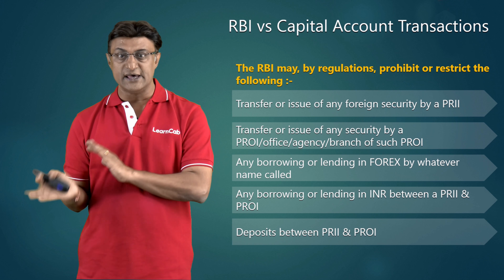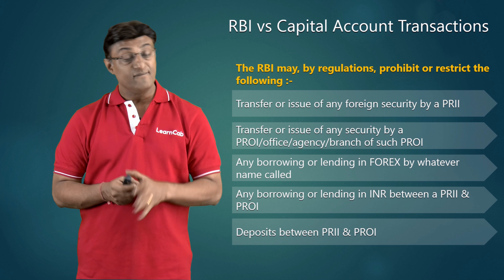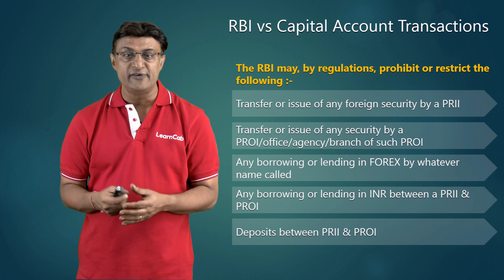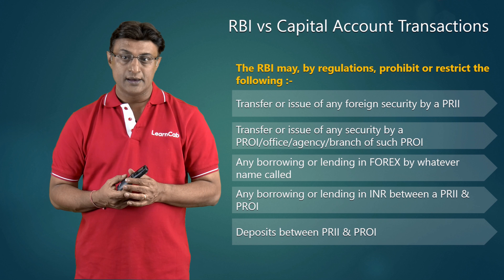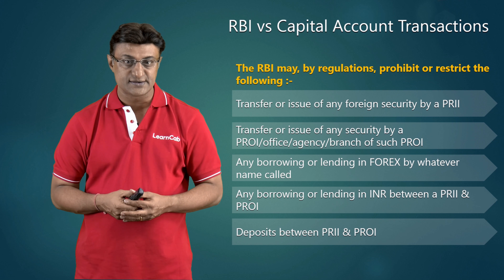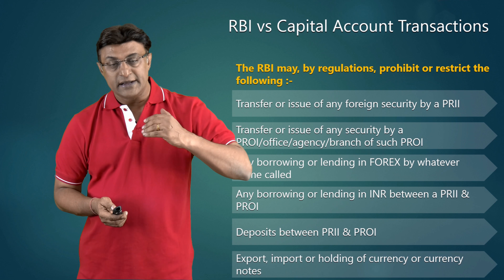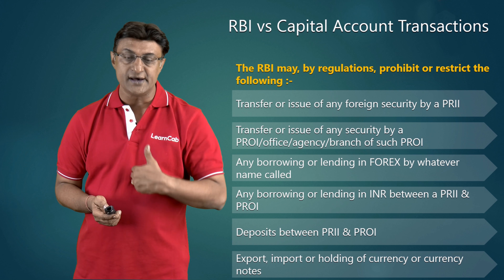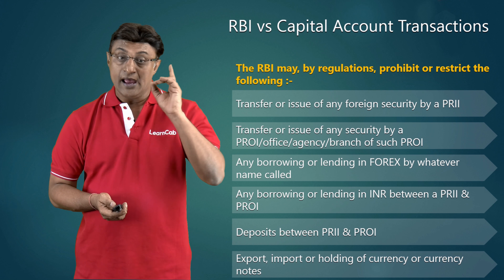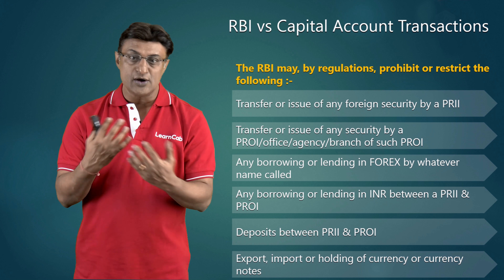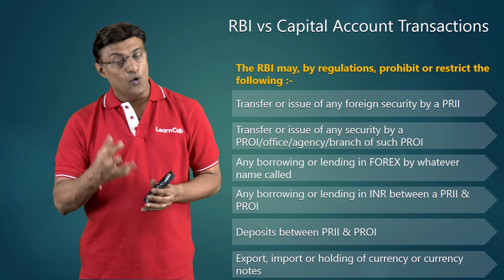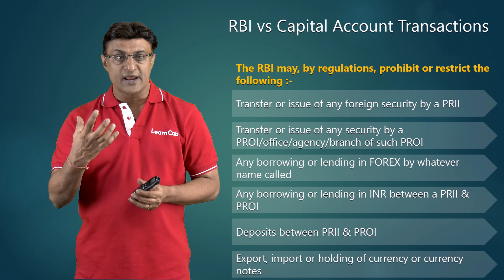Any borrowing or lending in Forex by whatever name called may also be restricted. We are only seeing here that the RBI is taking the power to restrict or prohibit them — how it is actually done we will come to. Transfer or issue of any security by a person resident outside India or its office or agency or branch is also included.